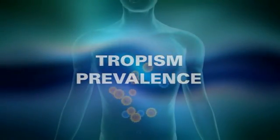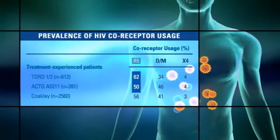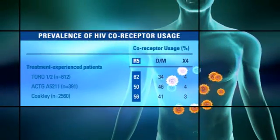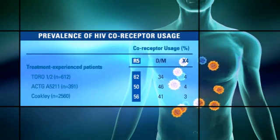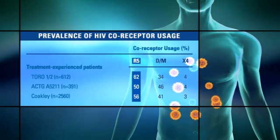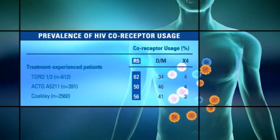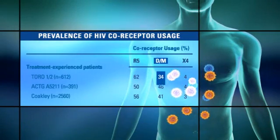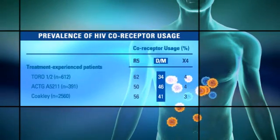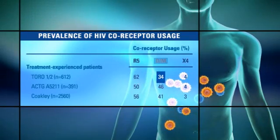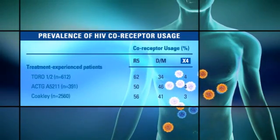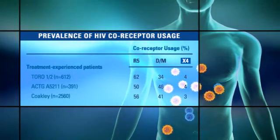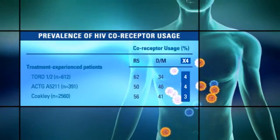Analysis of tropism prevalence in recent HIV clinical trials has shown that approximately 50% to 60% of highly treatment-experienced patients are infected with R5-tropic virus. Infection with dual-mixed-tropic virus accounts for the majority of the remainder of infections. The prevalence of X4-only virus in this patient population is rare, occurring in up to 4% of patients.